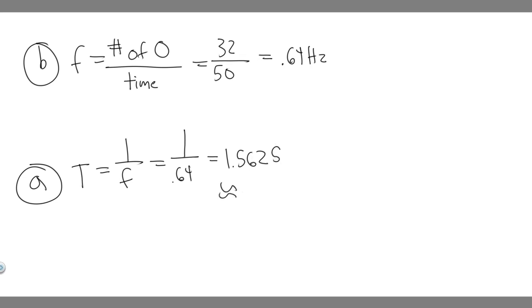And we can just round, so you can say 1.6 or just round however you want. But we measure period in seconds. So 1.6 seconds, this is your period. And then your frequency is 0.64 hertz. So this is your answer to B, and this is your answer to A. And so yeah, hopefully you found this useful.